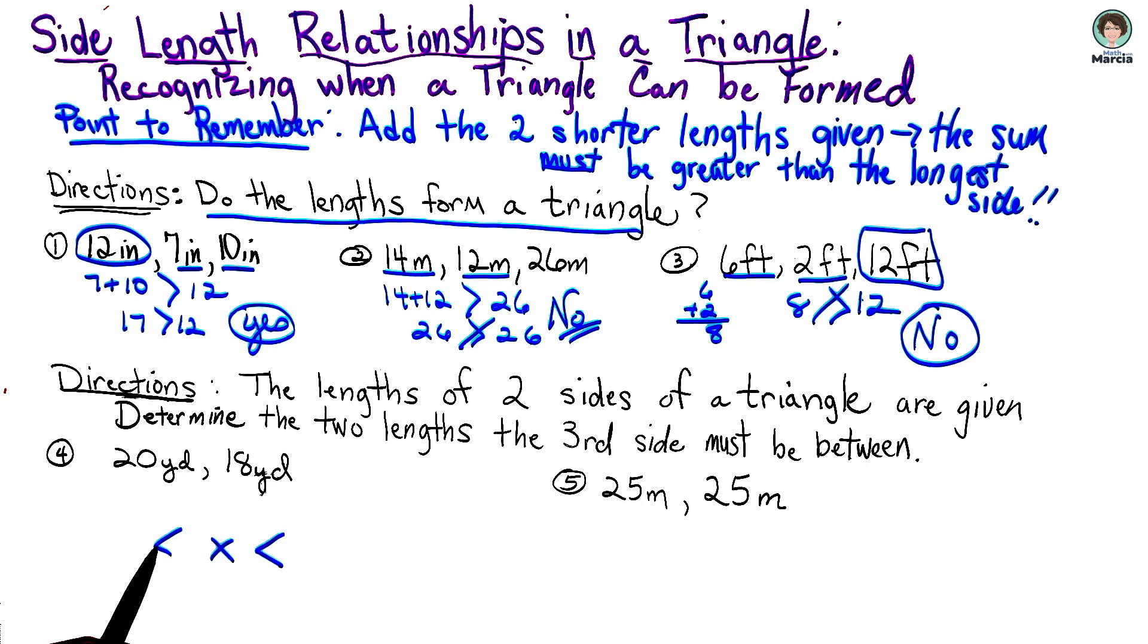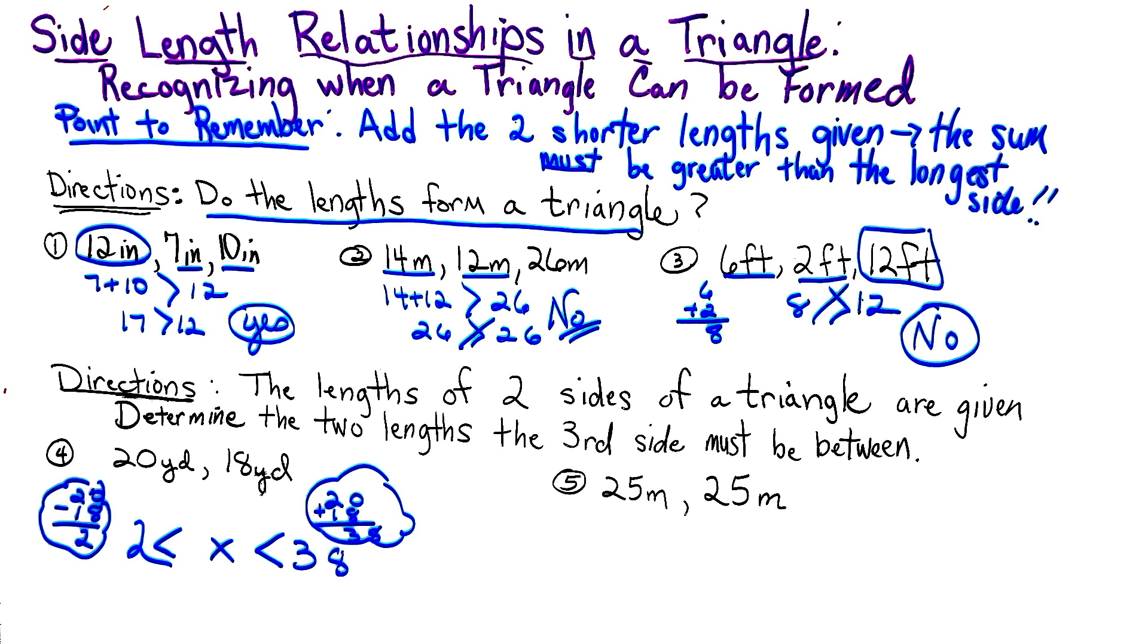So to find the smallest number, it's just a little subtraction problem. 20 minus 18, and we know that is 2. So we're going to put the 2 there. And now to find the larger side, we're going to add 20 plus 18, and that is 38. So the answer to this question is actually x will be between 2 and 38. Any numbers in between.